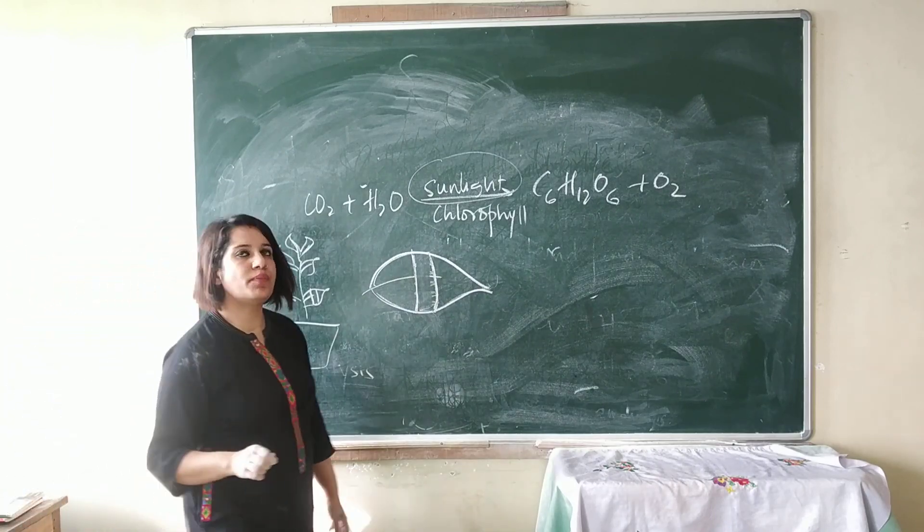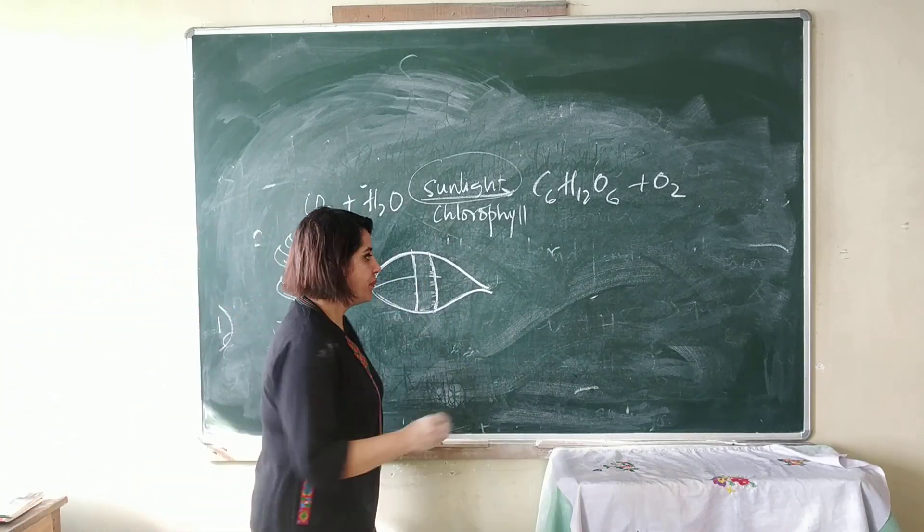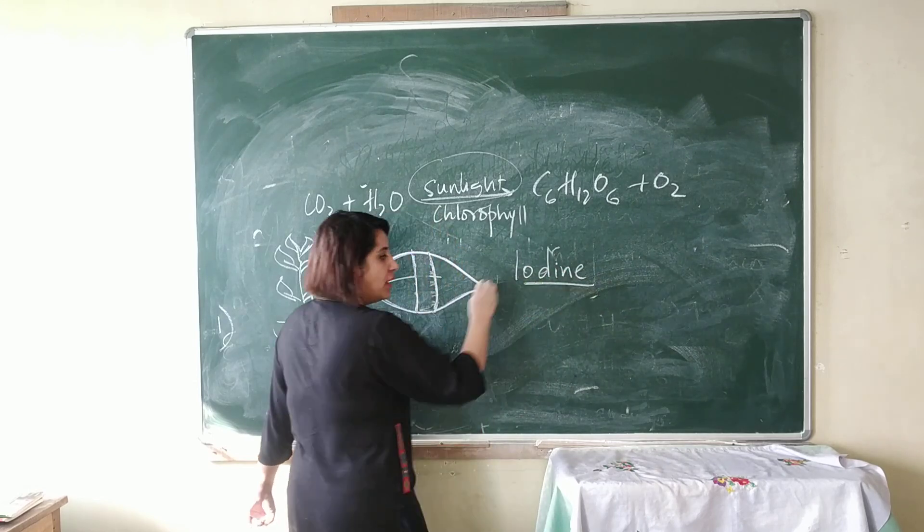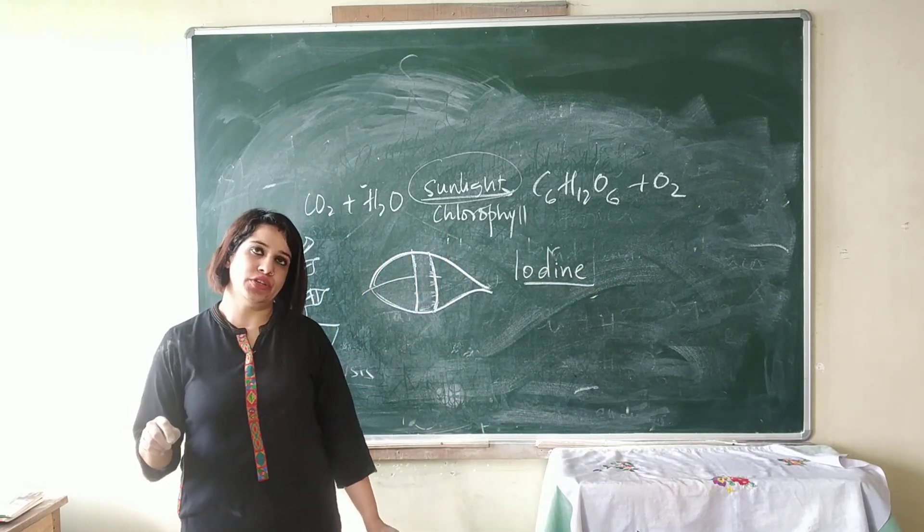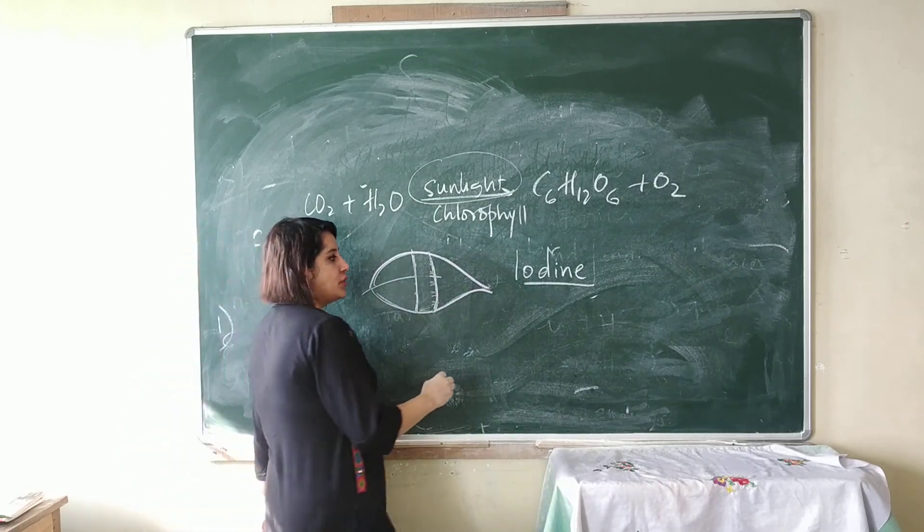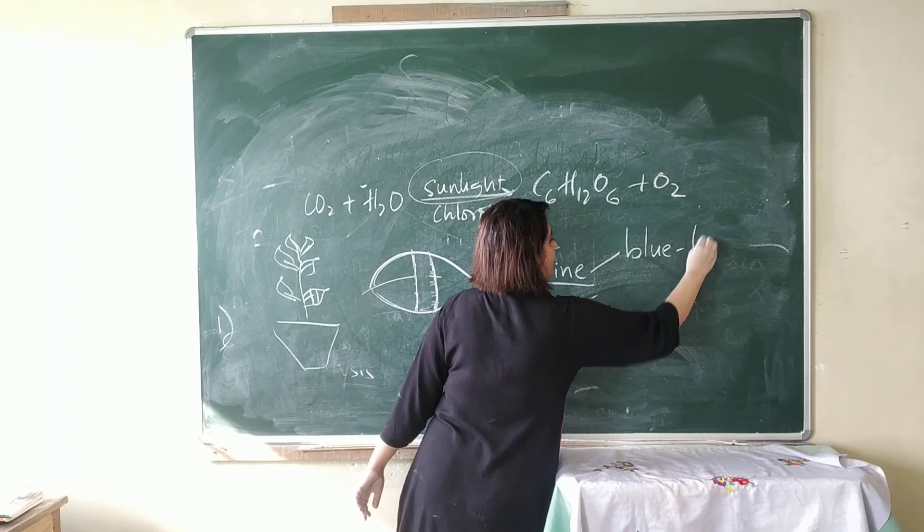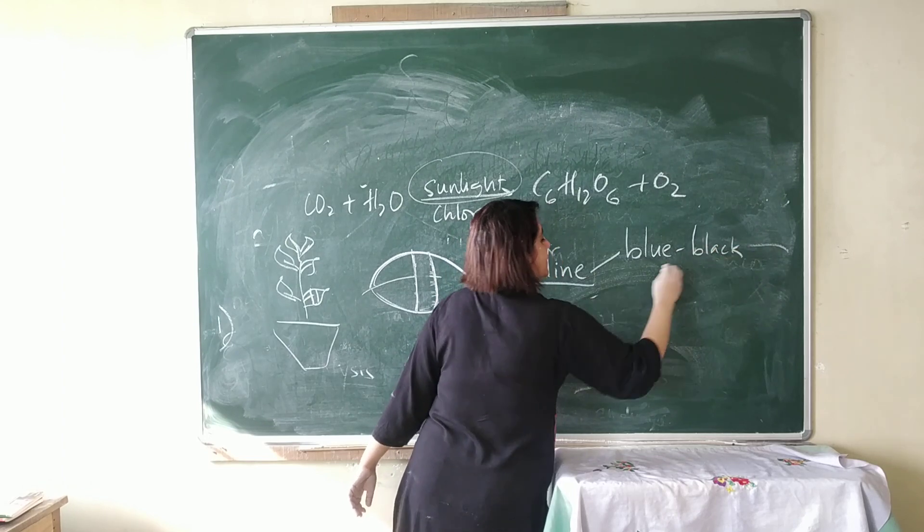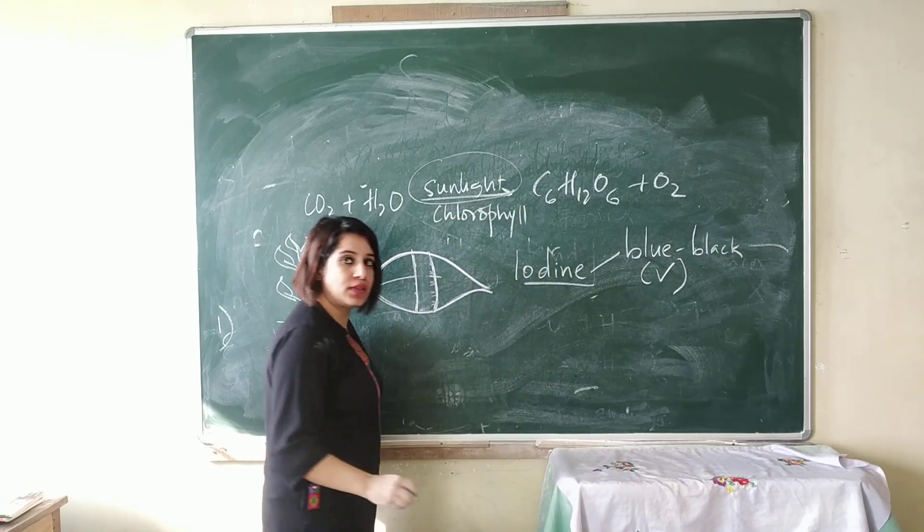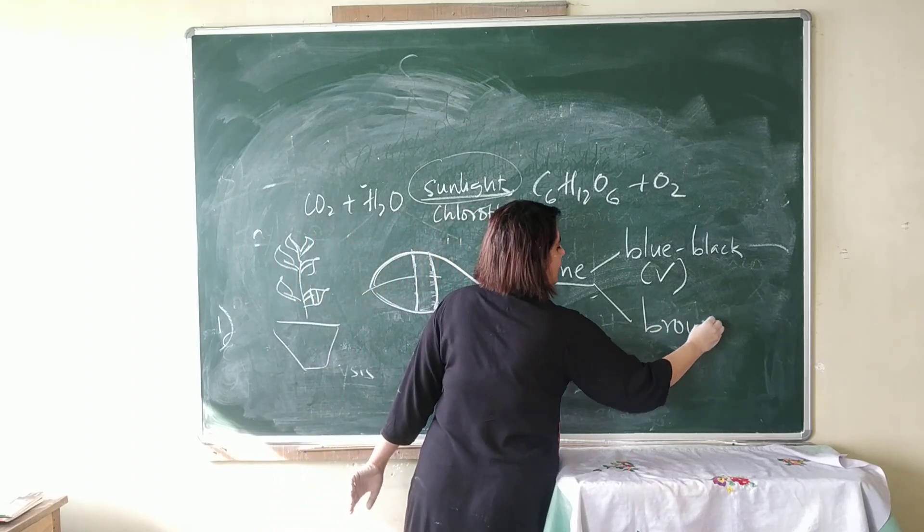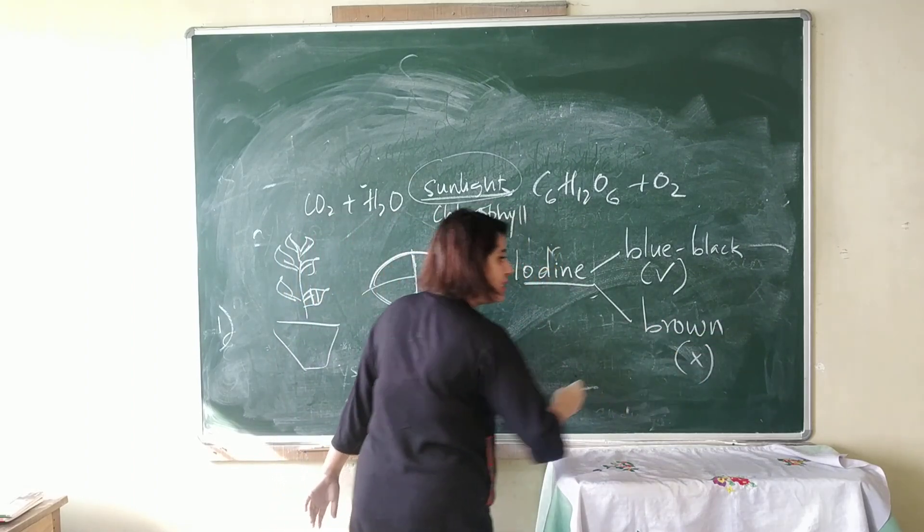How do we test a plant for starch? We take iodine solution. Iodine solution turns blue-black if starch is present and brown if starch is absent.